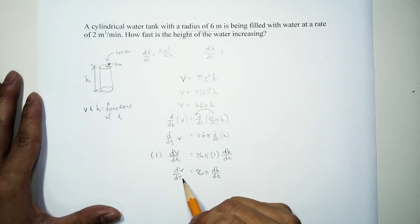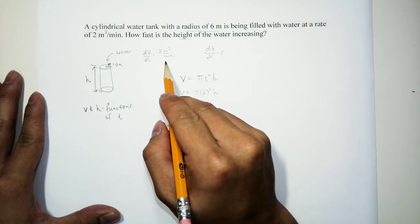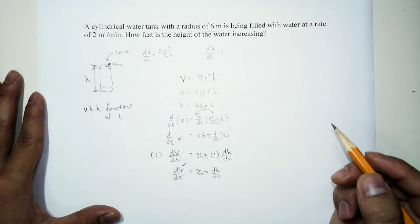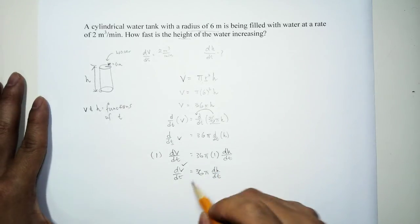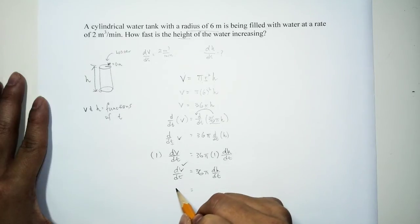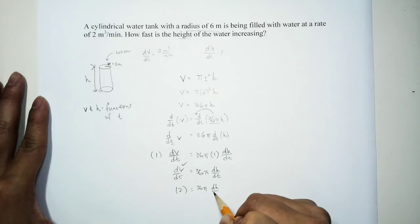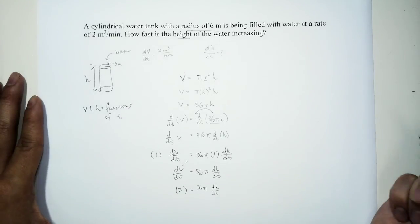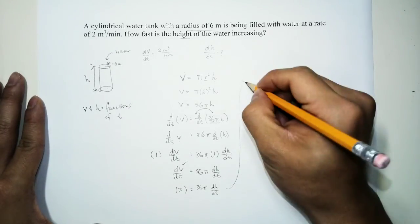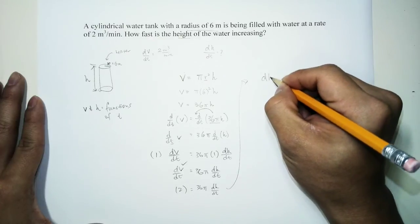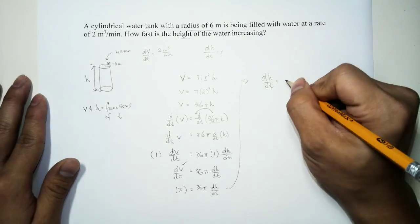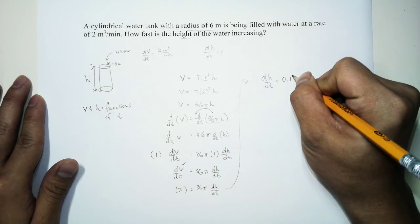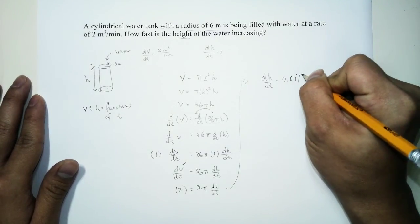Do we have dV/dt? Oh yes, we have it. So this is given. And all we need to do is to solve for dh/dt right here. So we will go ahead and substitute 2 right here. And 36π times dh/dt. So if we go ahead and solve for dh/dt right here, it is going to be, if you put everything into calculator, then you have 0.0177.